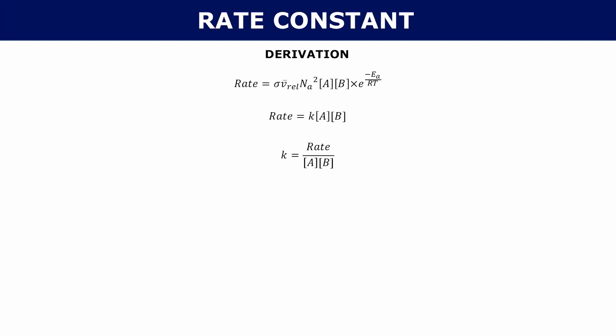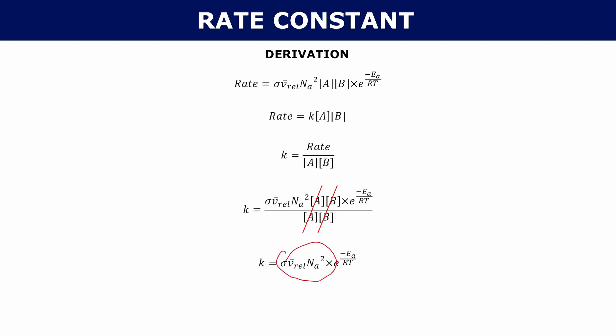Plugging in the expression for rate, you can cancel out the concentrations of A and B, and you're left with this final form. We can simplify it further by taking the entire first part — sigma times mean relative velocity times Avogadro's constant squared — and calling that A, a constant. So your final expression is k equals A times e to the minus Ea over RT.